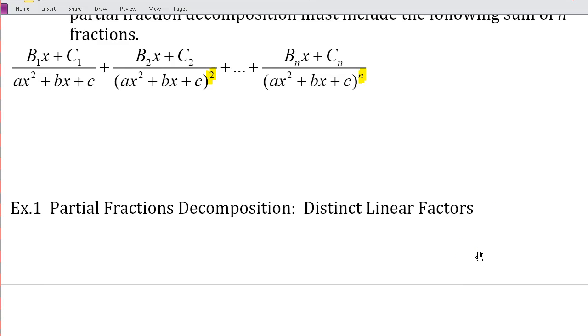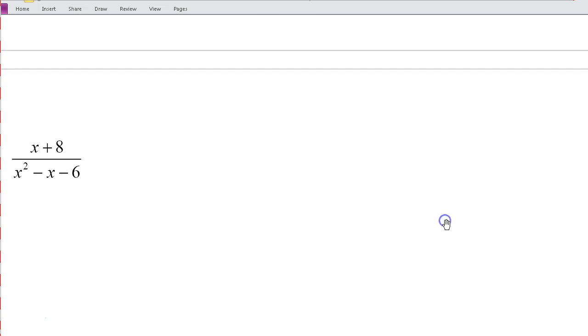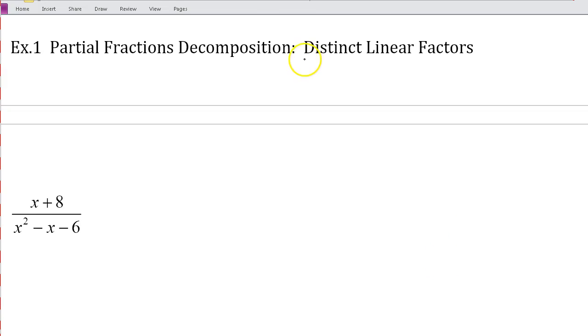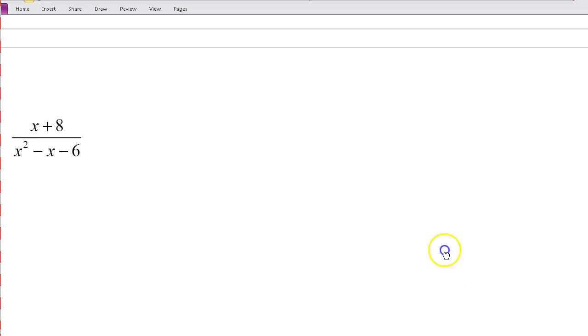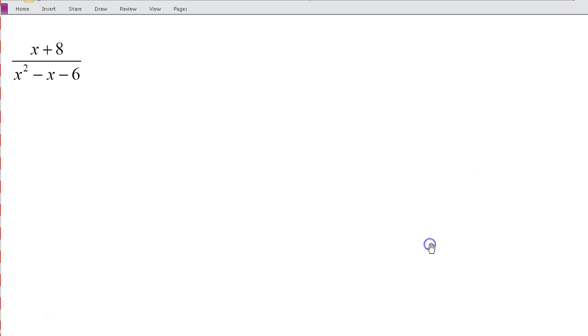So let's go ahead and take a look at an example. This first one is for distinct linear factors. So the first thing that I like to do is factor the denominator. So I've got x squared minus x minus 6. And let's see how this factors. I know these are going to both be x's. I need factors of 6 that add to negative 1. So let's try negative 3 and positive 2. So x squared, that would be minus 3, plus 2, so that would give me minus 1. And negative 3 times 2 is 6.